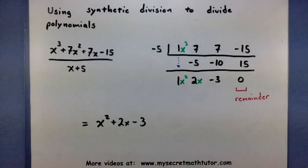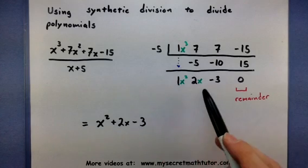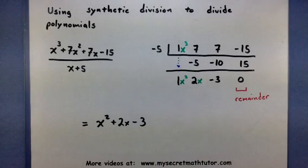There we go. So, you can see why this is such a fast process. It's basically a lot of multiplying and adding, but it gets the job done. And again, remember, you can only use synthetic division when dividing by x plus or minus a number. If you'd like to see some more videos, please visit MySecretMathTutor.com.